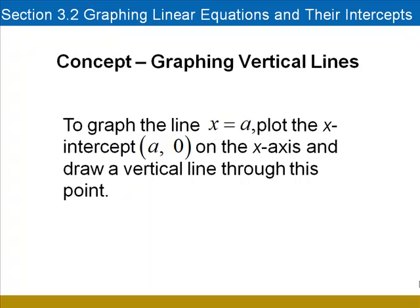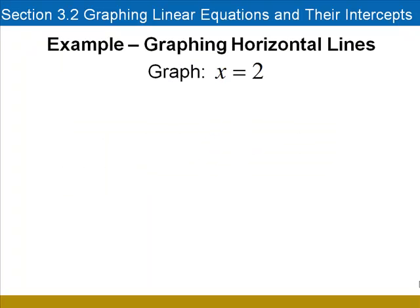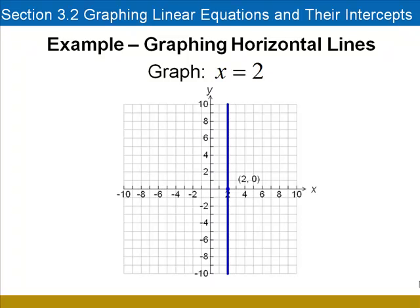A vertical line will be of the form x equals a. To graph a line in this form, we'll plot the x-intercept at a comma 0 on the x-axis and then draw a vertical line through the point. To graph x equals 2, we put the x-intercept at 2, 0 on the x-axis and draw a vertical line that passes through the point.